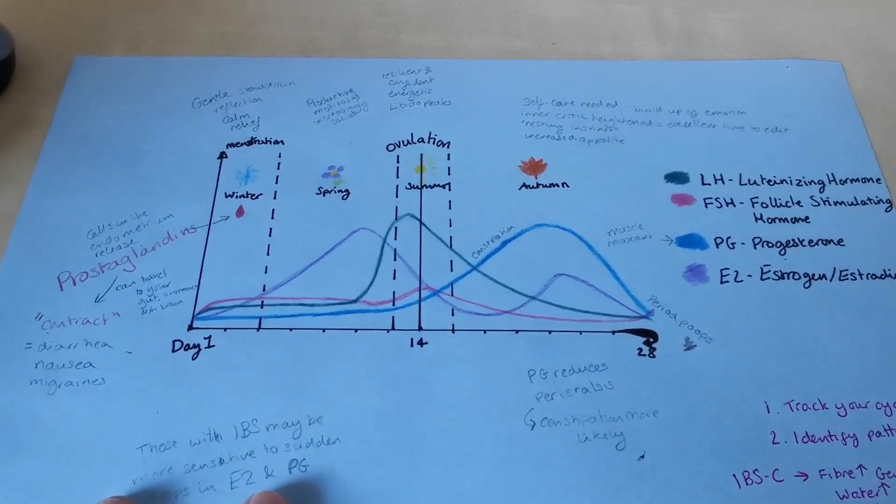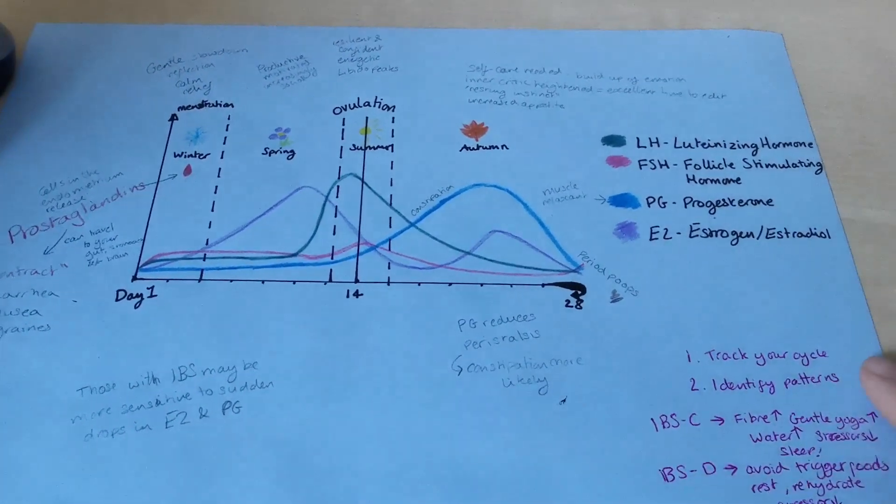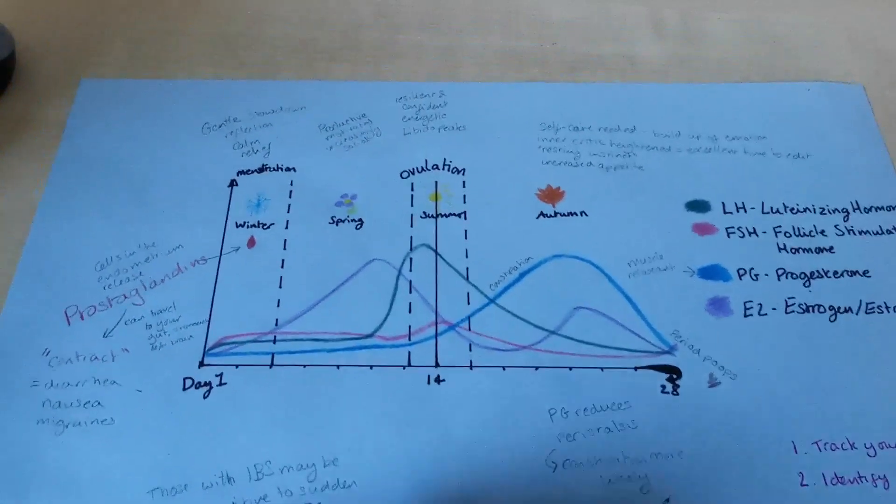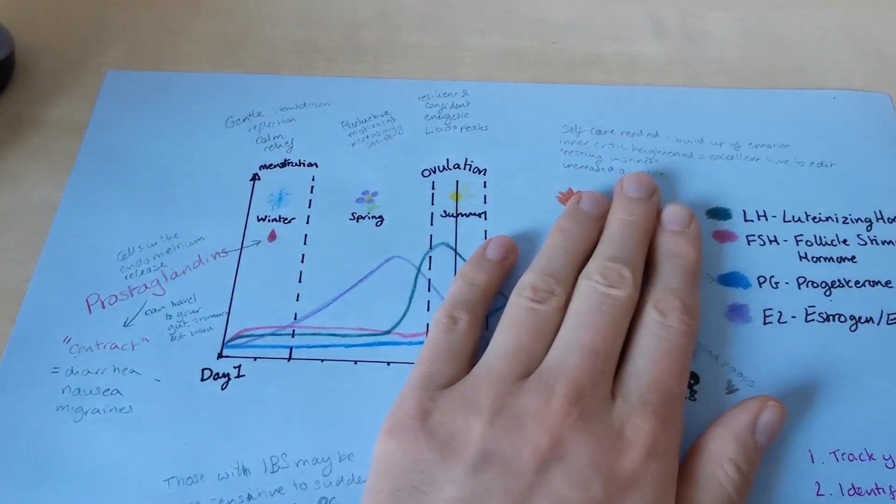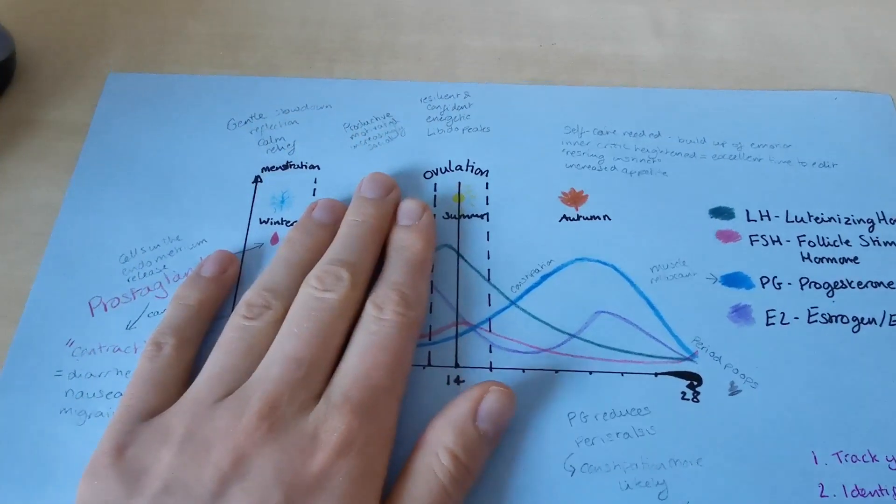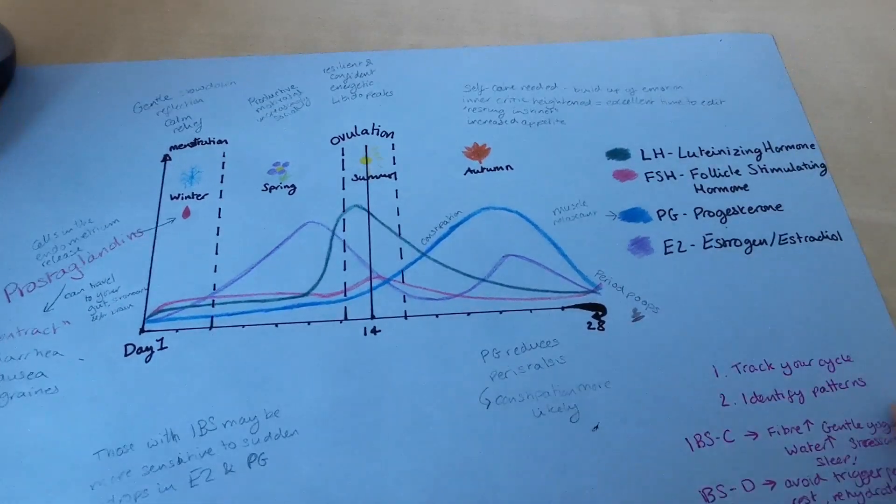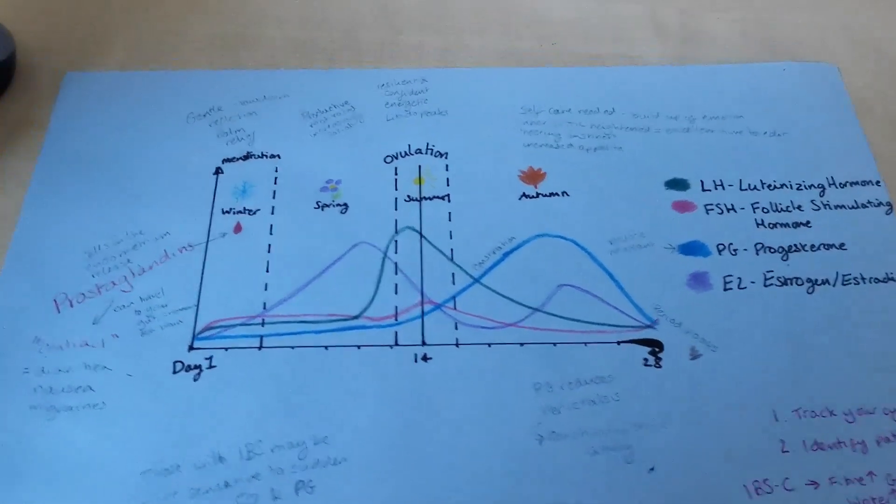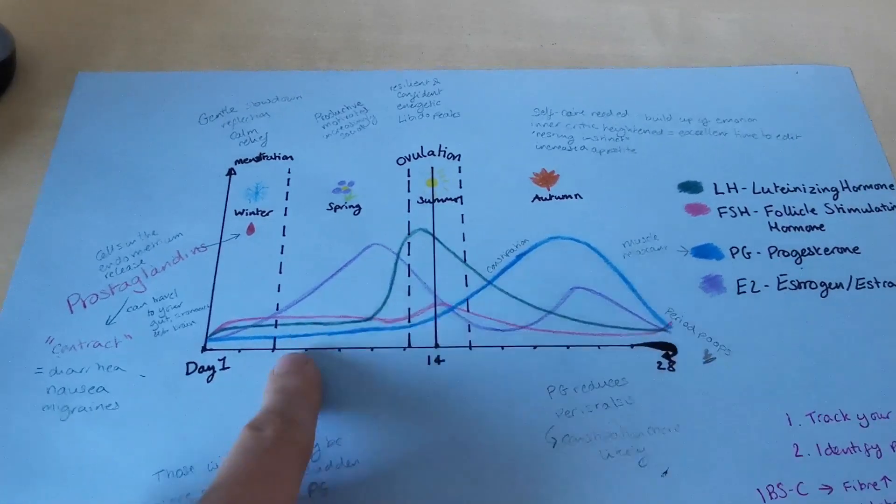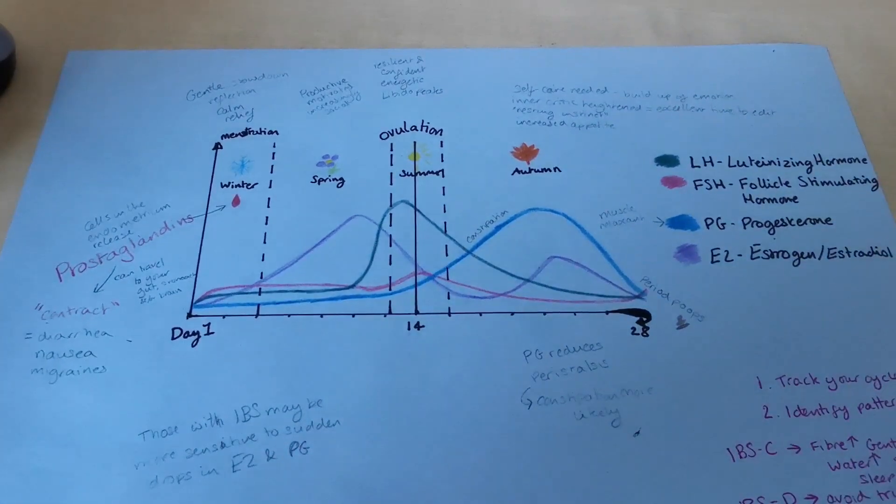So the things you can do are first and foremost is to track your cycle. If you're not anyway, it's really useful for knowing when you need to take care of yourself or when you need to push yourself and go out in the world and do brave things. And then identify patterns. So you might be able to pinpoint the exact days when you get these sudden drops and know how to take care of yourself.